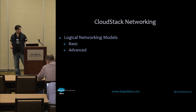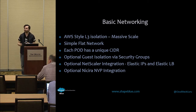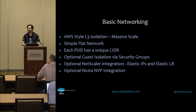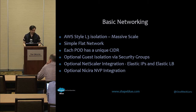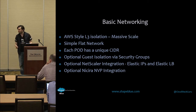Basic networking gives us AWS-style layer 3 isolation, which makes massive scale much easier because our security is distributed. Once you get to VLANs, we know there are limitations — only 4,096 VLANs — which for service providers can be a real issue. We end up with simple flat networks, with each pod having its own CIDR. Optionally, we can use guest isolation through security groups, or just create virtual machines without the security around them.